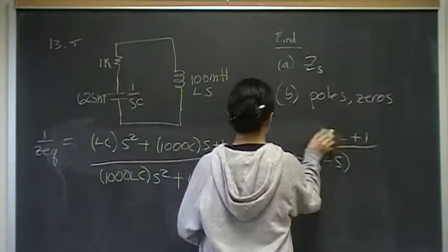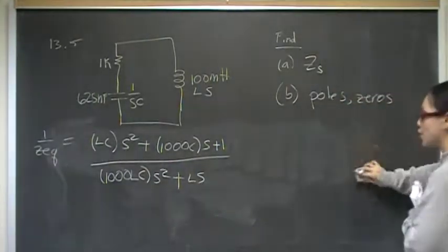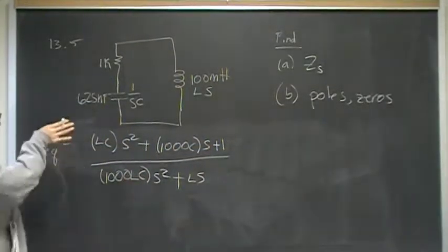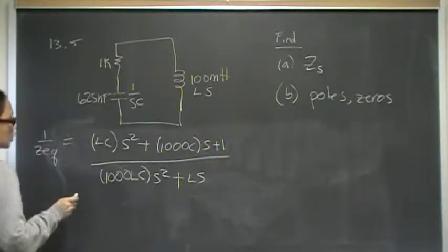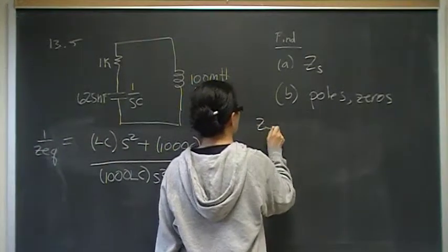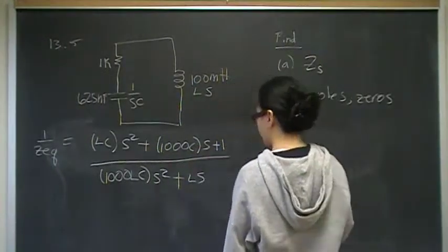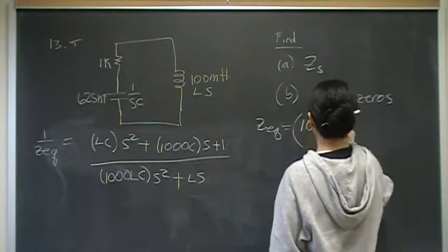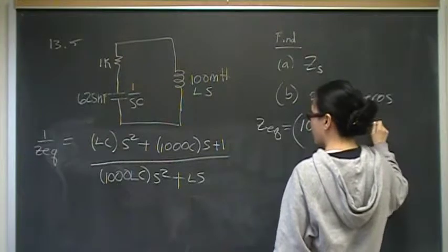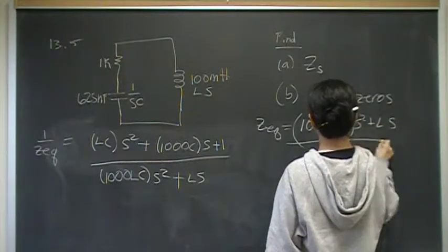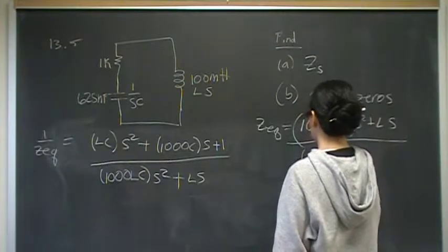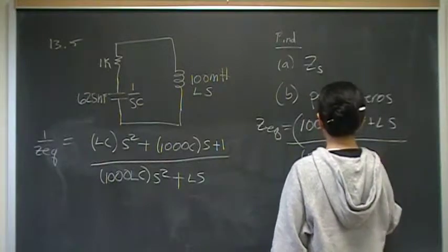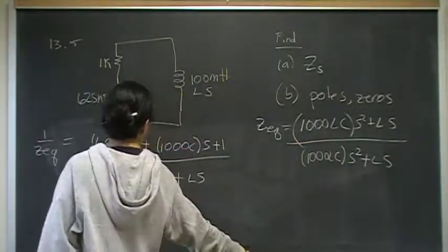That's all over, distributing this through, 1,000 Lc times S squared plus Ls. Now, remember that what we just found is actually 1 over Zeq. So therefore, Zeq is just going to be that whole thing flip-flopped. It's going to be 1,000 Lcs squared plus Ls over Lcs squared plus 1,000 Sc plus 1. And now is the time to plug in numbers.